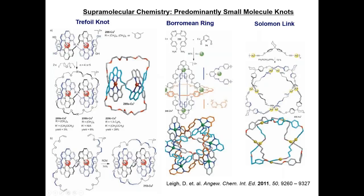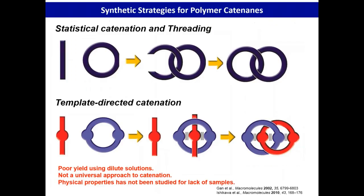Several synthesis strategies have been utilized for making catenates. One is statistical catenation — a ring and a linear chain, where the linear chain threads through the center, followed by ring closure to form a catenated structure. However, in reality this is very hard to statistically control. In such cases, one uses templated direction — directed catenation — using, for example, donor-acceptor or hydrogen bond interactions between the ring and the linear structure.